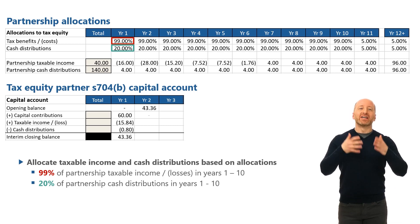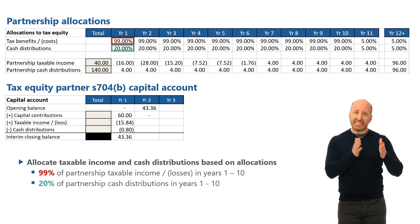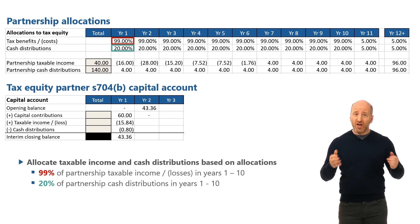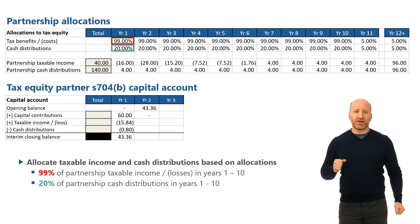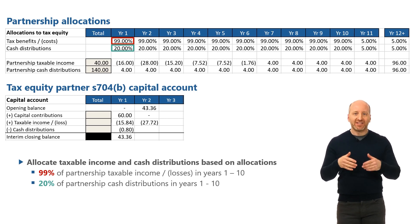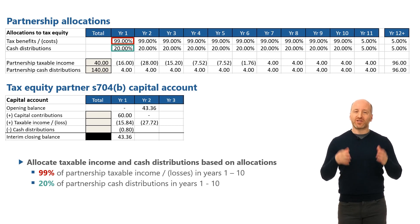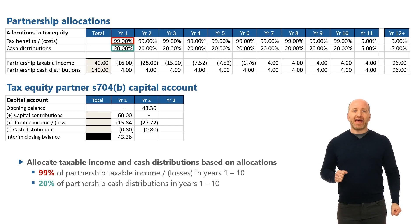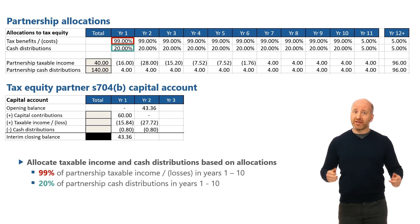In year two, they're going to be allocated 99% of the $28 million in losses from the partnership, and that will reduce their capital account by $27.72 million. And they will also be allocated 20% of the $4 million of cash distributions, or $0.8 million. So they will end with a closing balance in their capital account of $14.84 million.